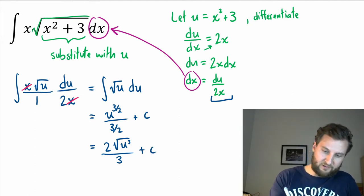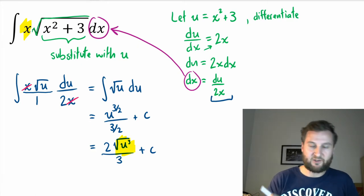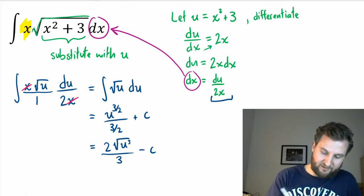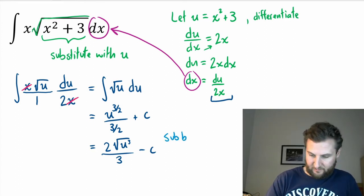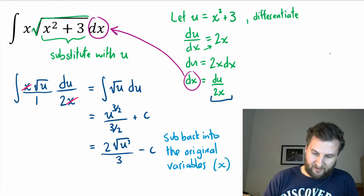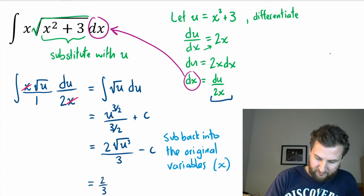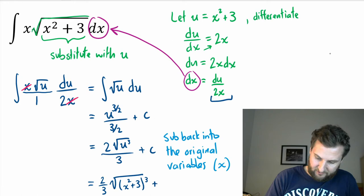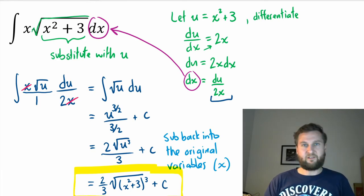Don't forget your constant. Now my integral is in terms of u, but my original integral was in terms of x, so I have one last step: sub back into my original variable x. I know that u equals x squared plus 3, so replacing it gives the final answer: (2/3) times the square root of (x² + 3) all cubed, plus c. That is my final integral after substituting back.